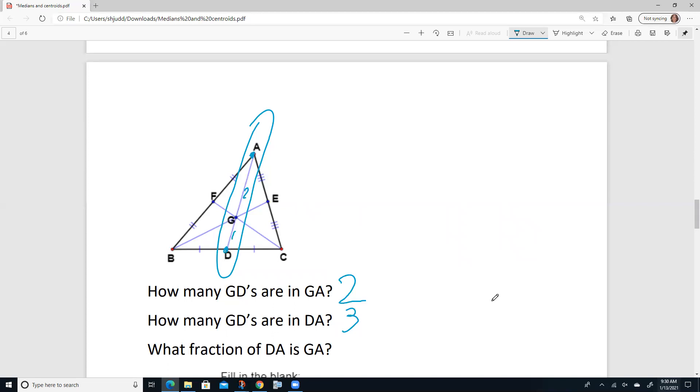Okay, so we could use GD to split DA into three equal parts. Now we want to find out, what fraction of DA is GA? Well, GA makes up two out of the three parts, so it's two thirds.